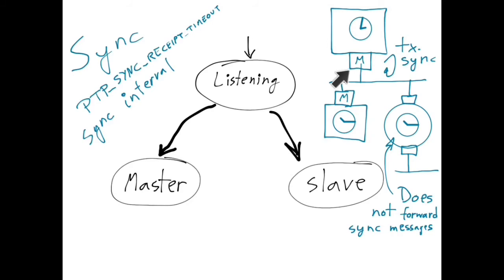The old master, in turn, which was already in the master state, would have started receiving sync messages from the new master, determined that its own clock is worse, and would have transitioned to the slave state.